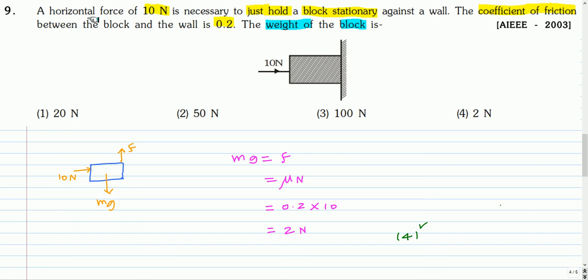Here is the next question. A horizontal force of 10 N is necessary to just hold a block stationary against a wall. The coefficient of friction between the block and the wall is 0.2, the weight of the block is.